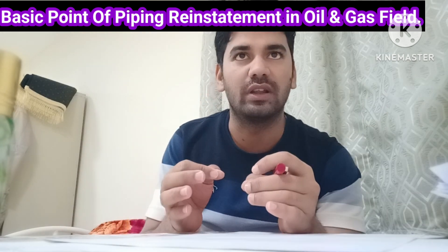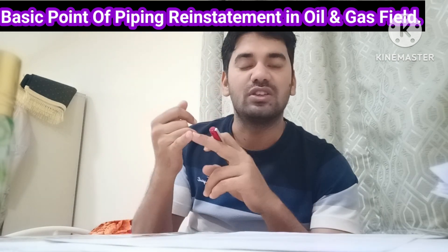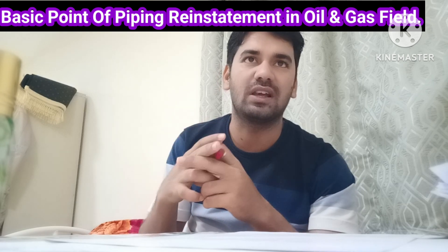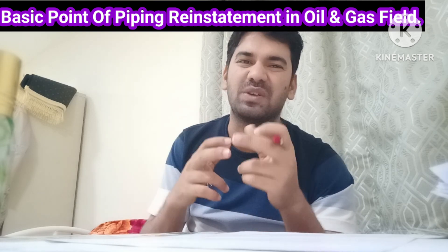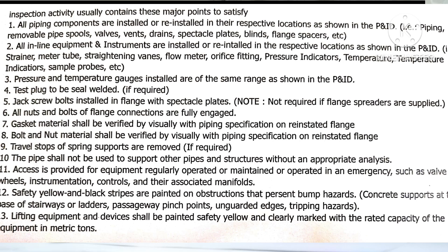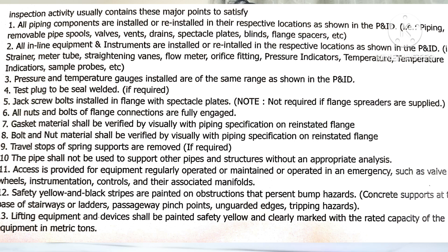After the hydro test, piping components such as valves, NRV, vents, drains, spectacle blinds, flange spacers, control valves, and MOVs need to be reinstalled. These were removed during the hydro test and after the hydro test are reinstalled as part of the reinstatement activity.